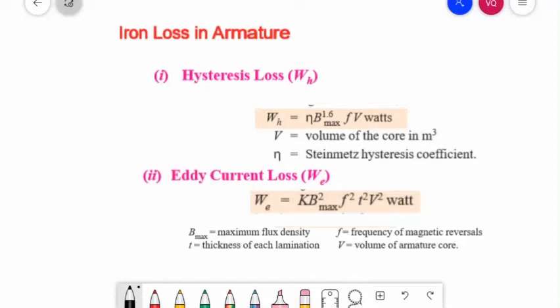Our next topic is the losses or total losses in a DC generator. First we will discuss the iron loss in an armature. Due to the rotation of the iron core of the armature in the magnetic flux of the field poles, there are some losses taking place continuously in the core, known as iron losses or core losses. Iron losses consist of: number one, hysteresis loss, and number two, eddy current loss.